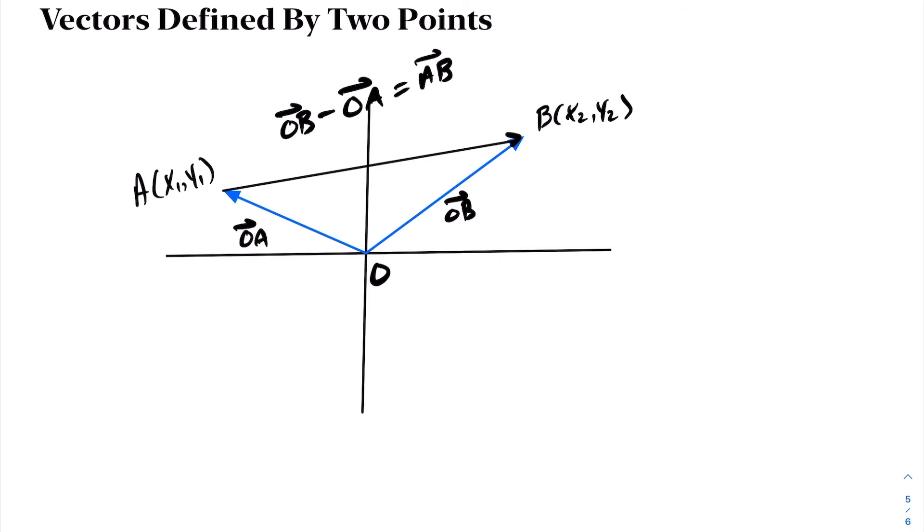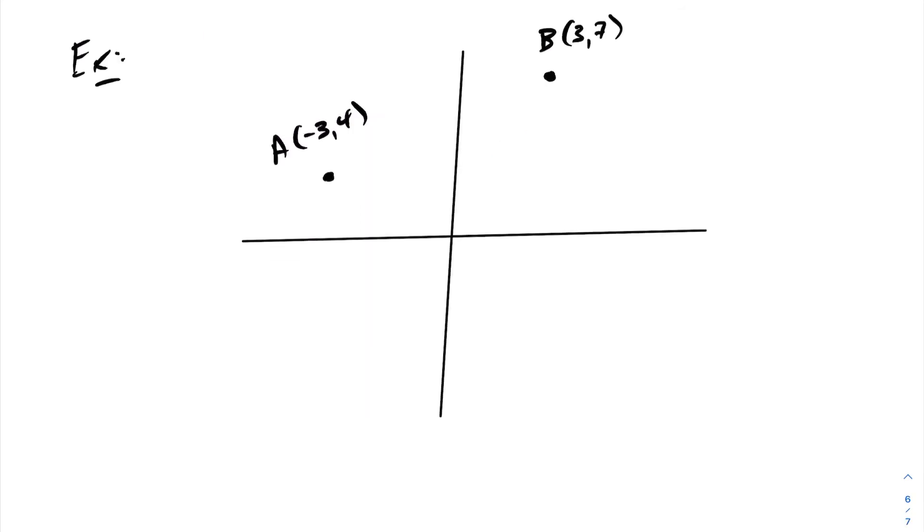Let's look at an example. We have two points in our Cartesian plane, A and B, and we want to create a vector between these two points starting at point A and going to point B. Notice the arrow indicates direction. Vector AB equals OB minus OA, which in this case is (3,7) minus vector OA which is (-3,4), which becomes (3,7) minus (-3,4), and this becomes (6,3).